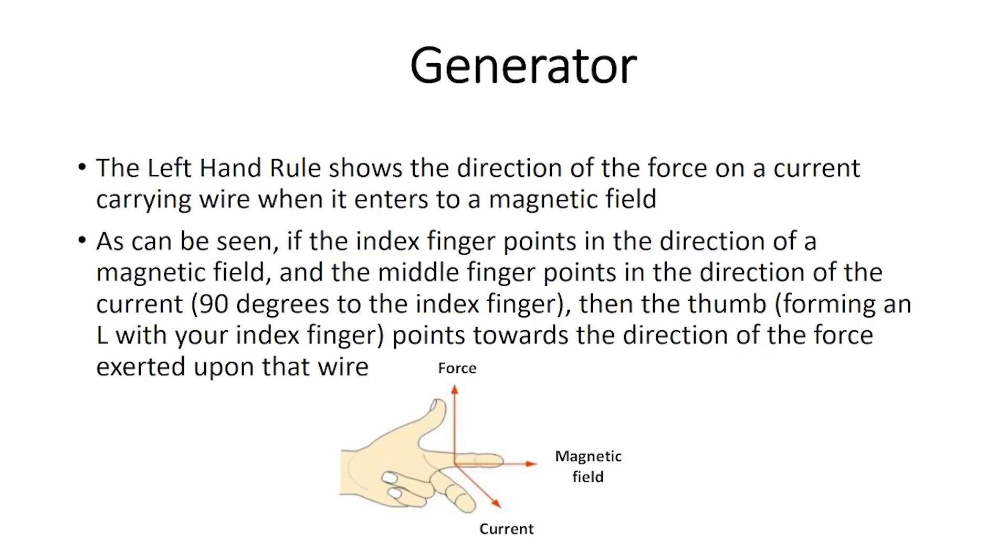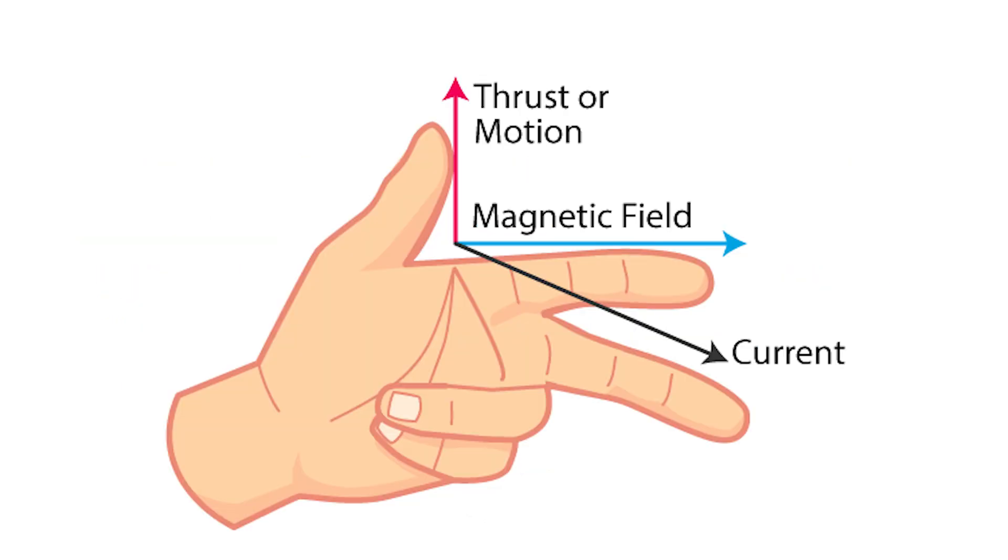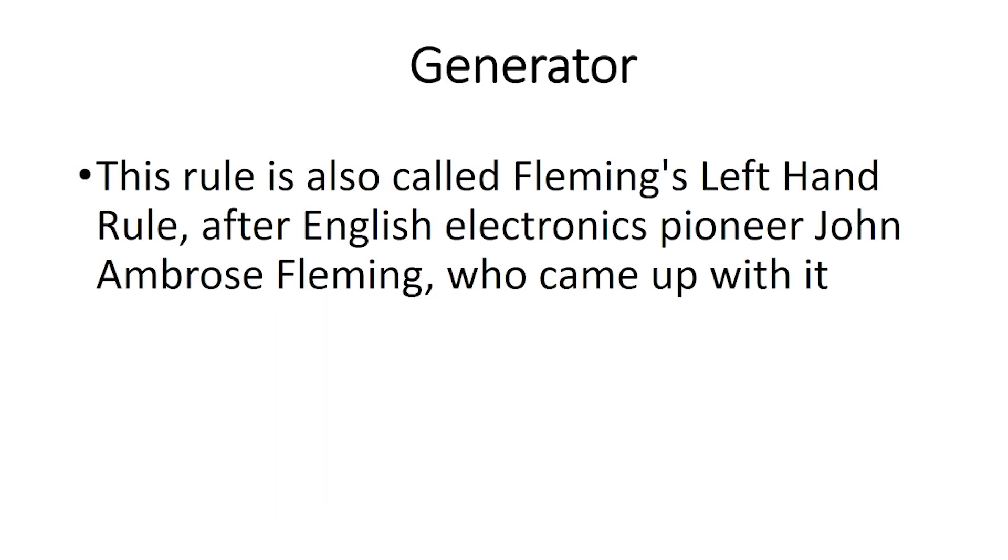The left-hand rule shows the direction of the force on a current carrying wire when it enters a magnetic field. If the index finger points in the direction of the magnetic field, and the middle finger points in the direction of the current, 90 degrees to the index finger, then the thumb, forming an L with your index finger, points towards the direction of the force exerted upon that wire. This rule is also called Fleming's left-hand rule, after the English electronics pioneer John Ambrose Fleming.